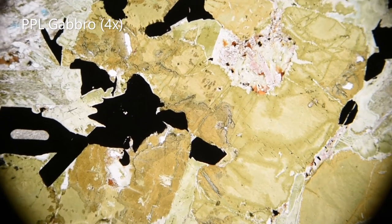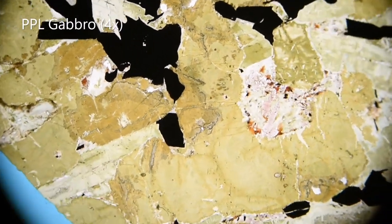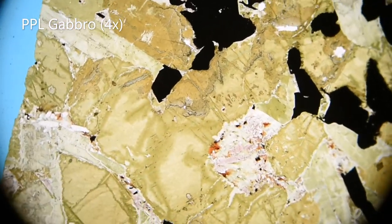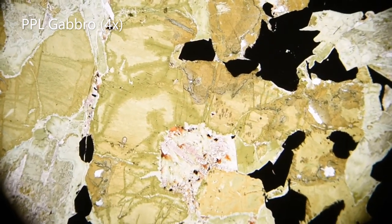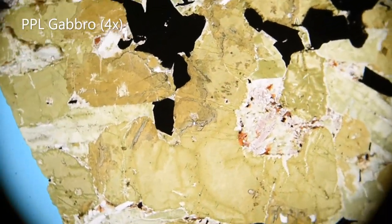Pleochroism refers to a shift in color as you rotate a sample. This sample is a gabbro like the last, but has been altered with biotite and serpentine. Biotite is the mineral that changes from brown to green as the sample rotates.